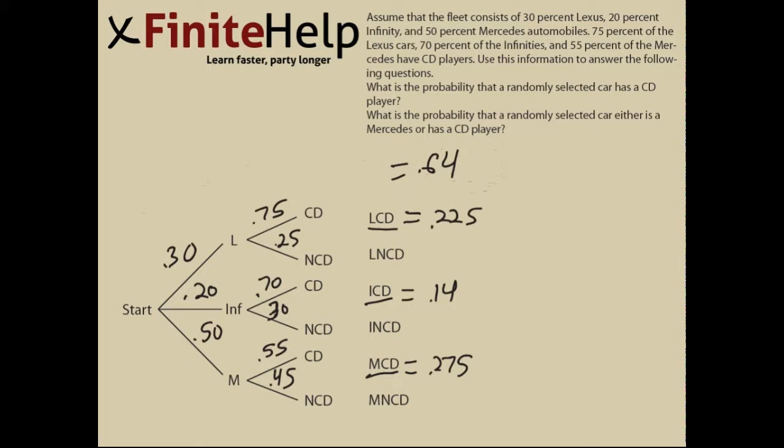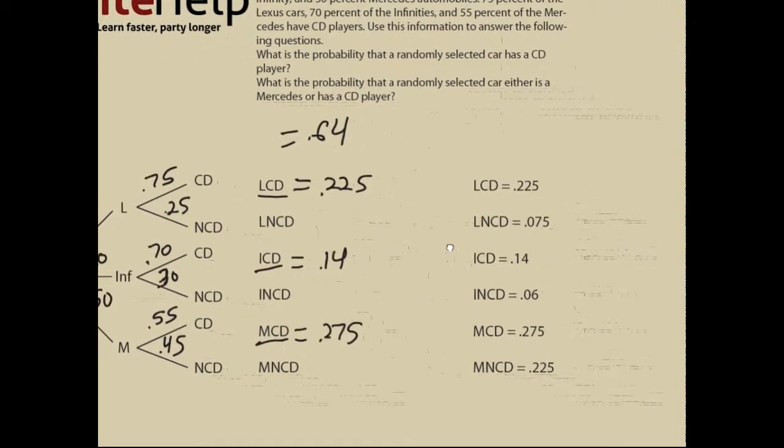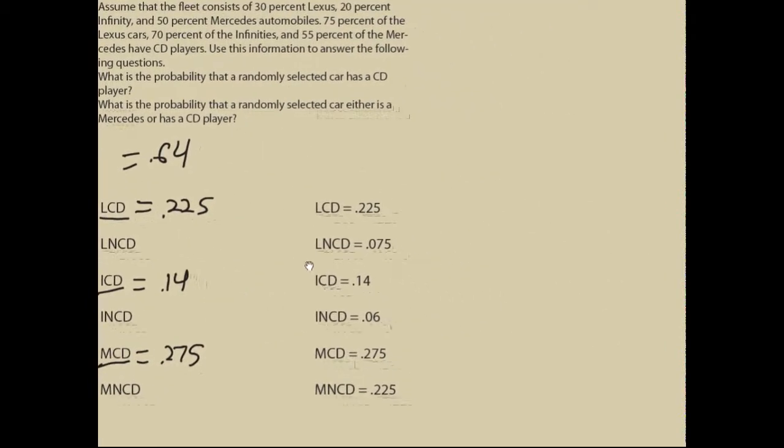Moving on to part two, it asks: what is the probability that the randomly selected car is either a Mercedes or has a CD player? We need to identify all the outcomes that fit that criteria.